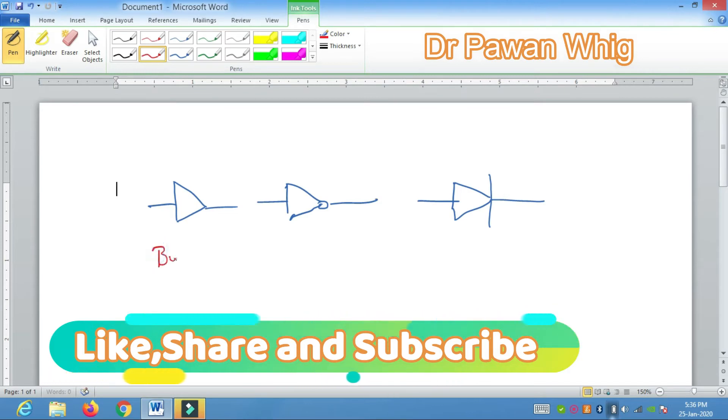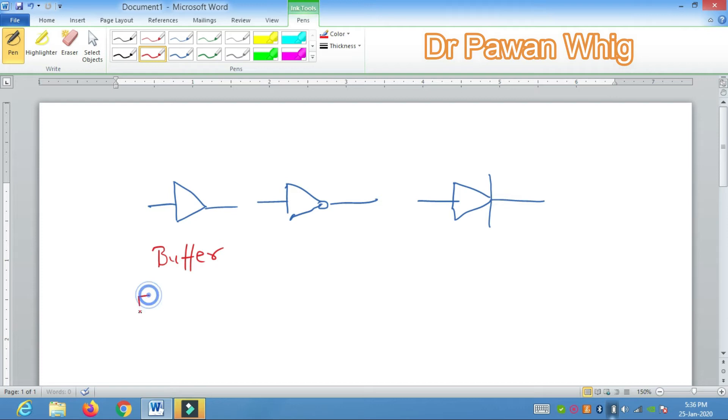The very first symbol is buffer. Buffer is basically used in between to connect two circuits, or whenever there is a need of balancing between the loads of the two we need one buffer. Buffers are needed whenever we have to make the circuit synchronize.